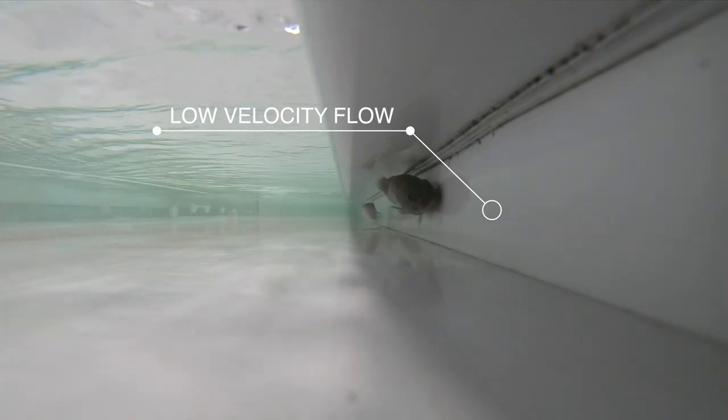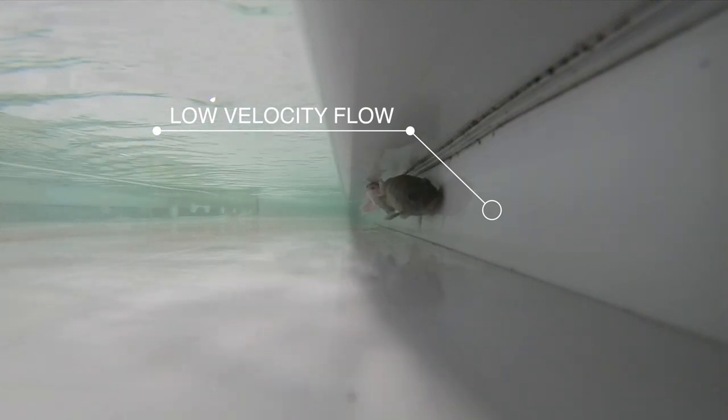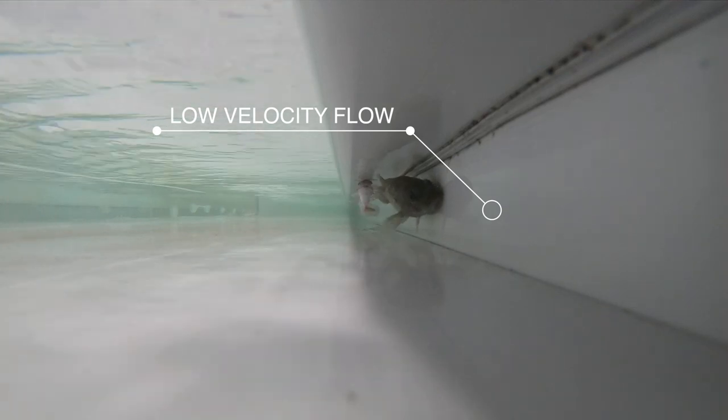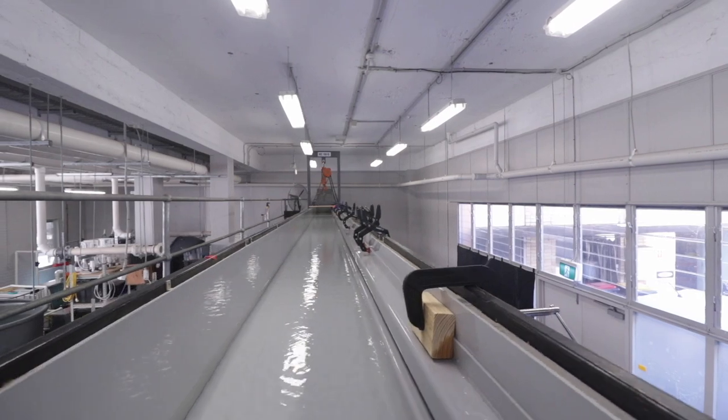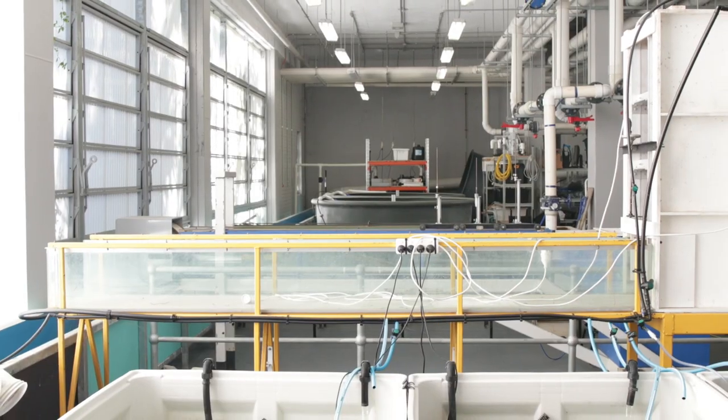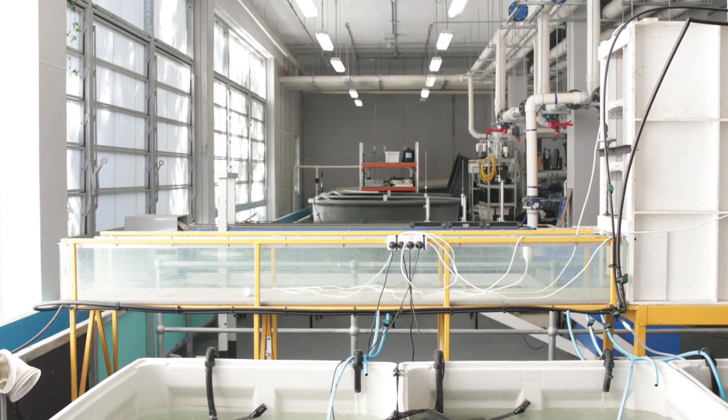This novel design is extremely cheap to retrofit or incorporate into new structures and should have a huge benefit to Australian native fish by improving fish passage. To enable this research, we're using 12 metre flumes in the Biohydrodynamics Lab at the University of Queensland. This has enabled us to test the beams in a real scale situation.